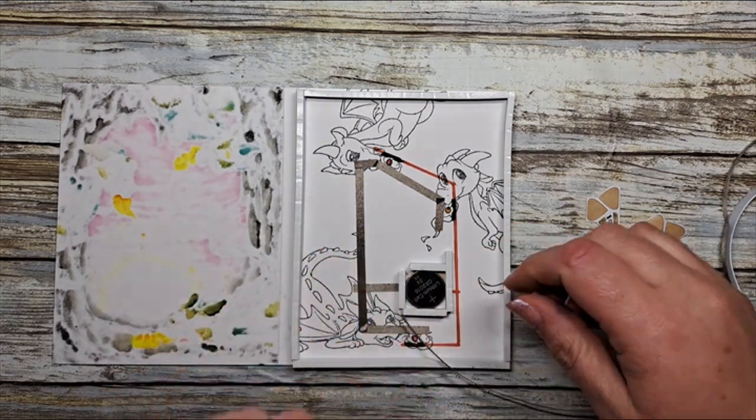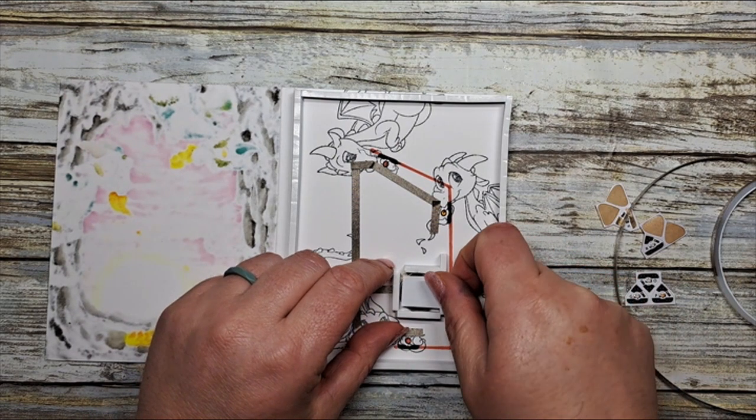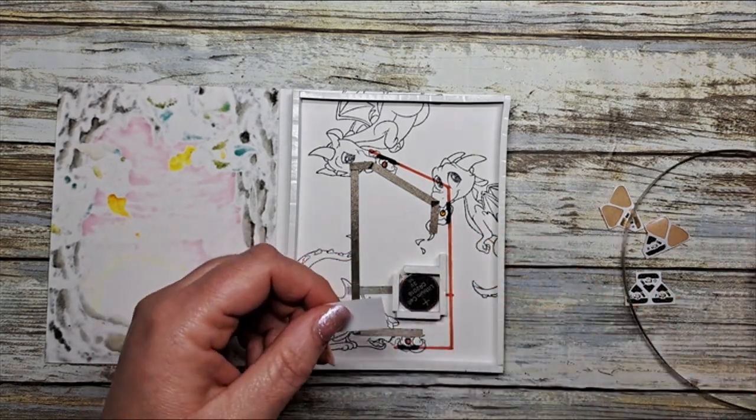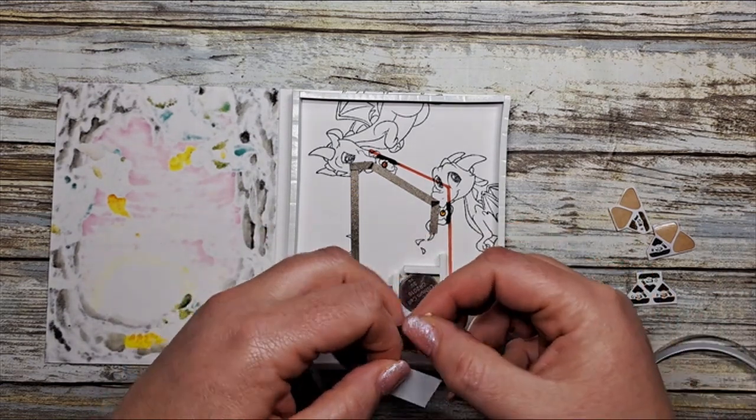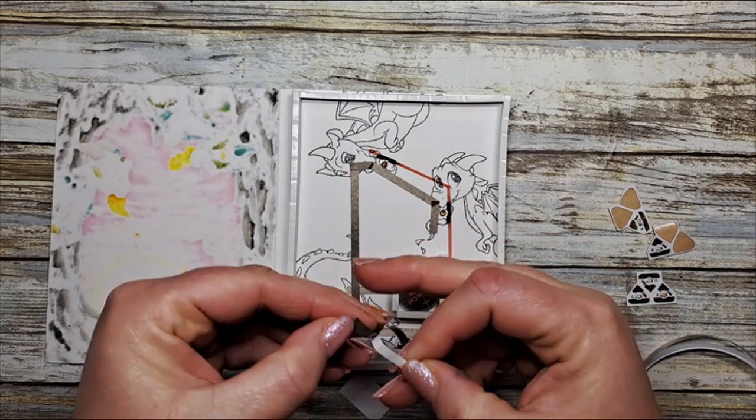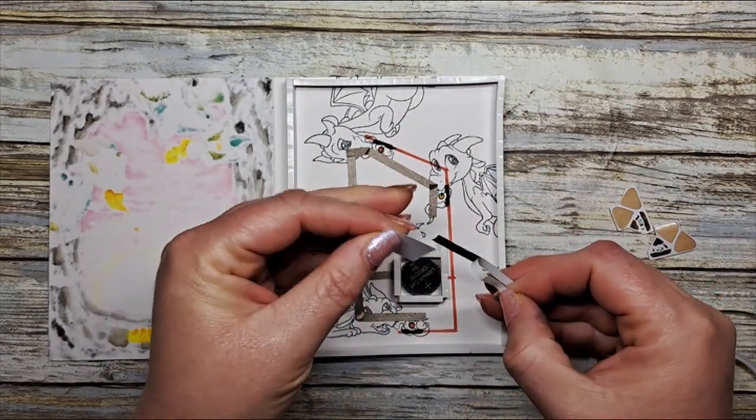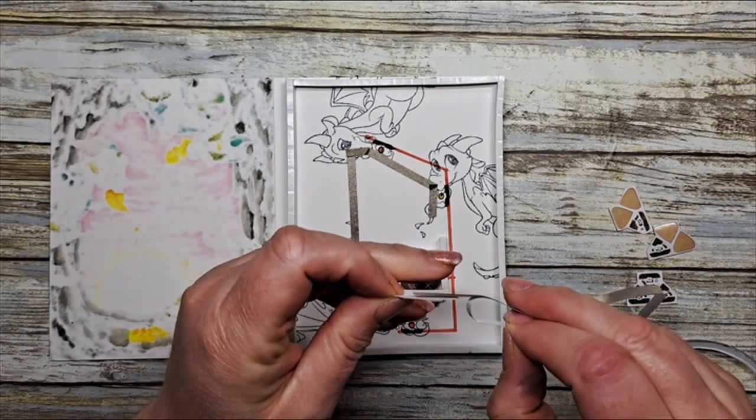To begin this side of the circuit I need to apply our conductive fabric tape to the back side of our flap. It's easily done by just sticking it to the back piece of your paper.